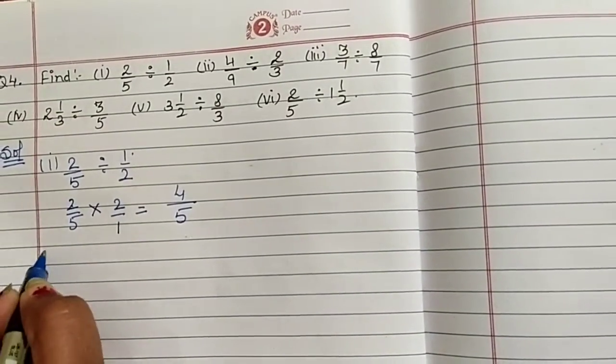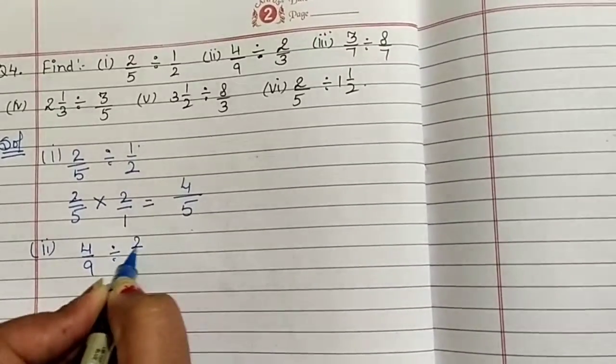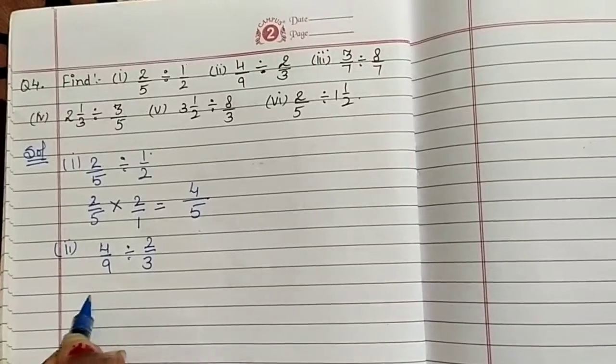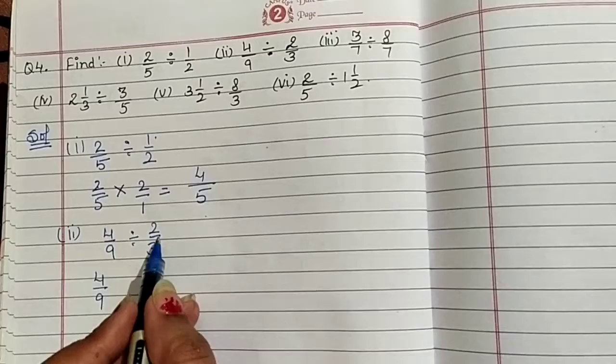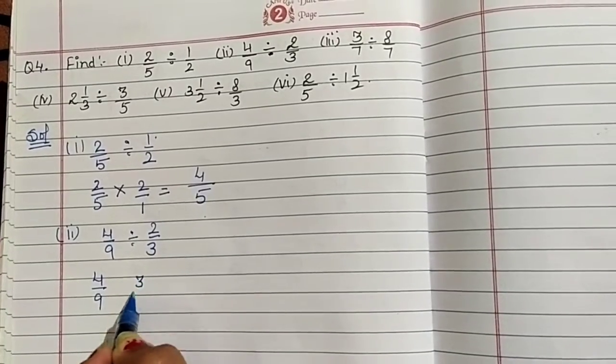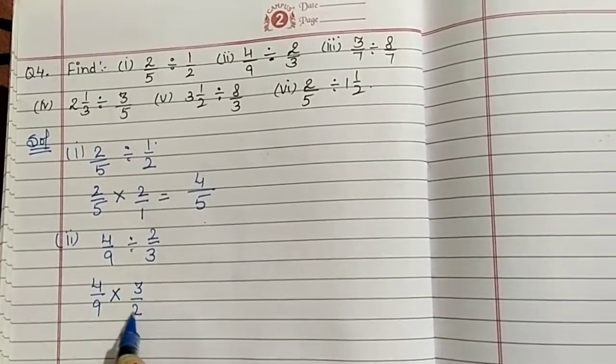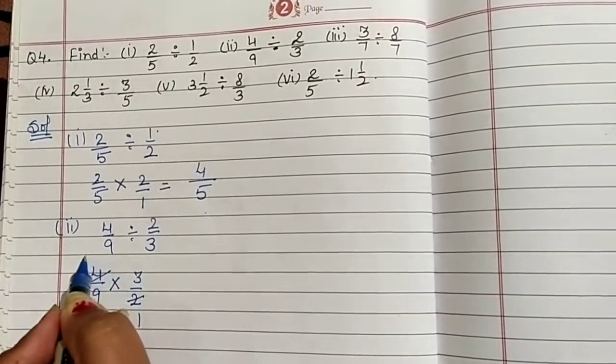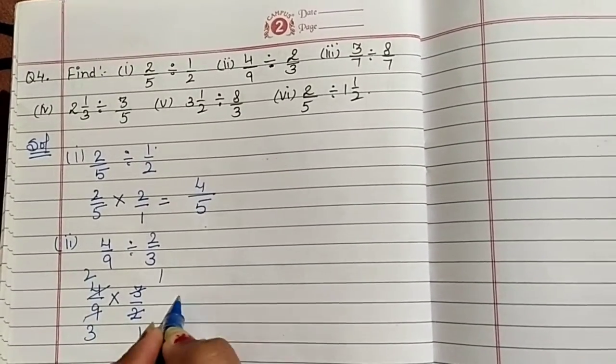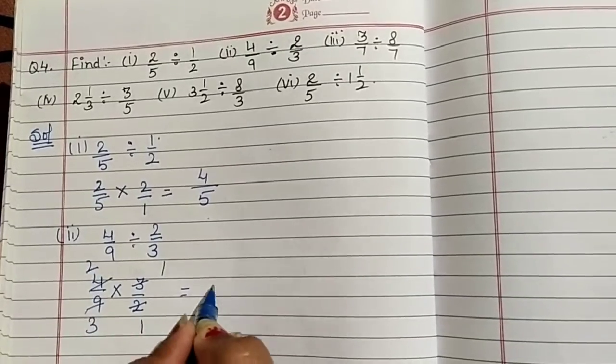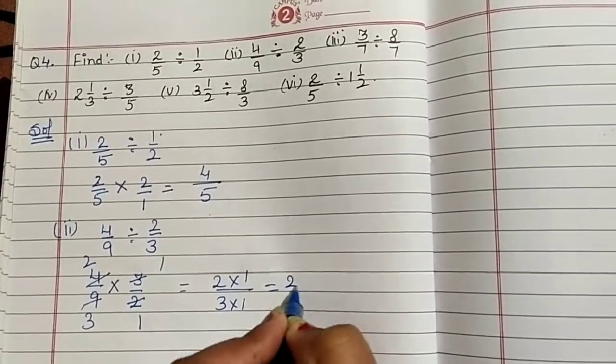Next is second part that is 4 by 9 divided by 2 by 3. Same, first term as it is 4 by 9. Take reciprocal of second term that is 3 by 2 and division sign changes to multiplication. 2 ones are 2, 2 twos are 4, 3 ones are 3, 3 threes are 9. Then 2 into 1, 3 into 1. We get 2 by 3.